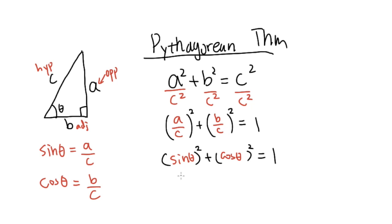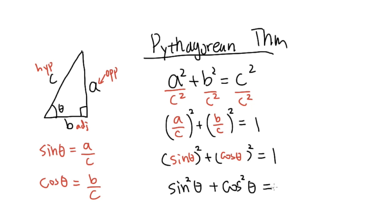So we have (sine theta) squared plus (cosine theta) squared equals 1. Now, when we write sine theta to the second power — meaning sine theta times sine theta — we usually write it as sine squared theta, putting the square right after 'sine.' These two notations mean the same thing. So we have sine squared theta plus cosine squared theta equals 1, which is one of the most famous and most used identities we'll be seeing.